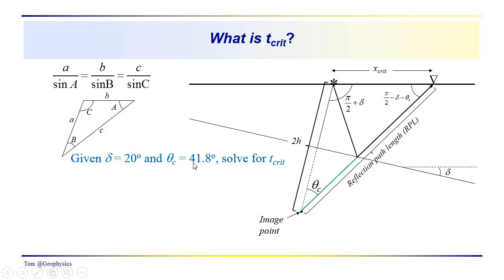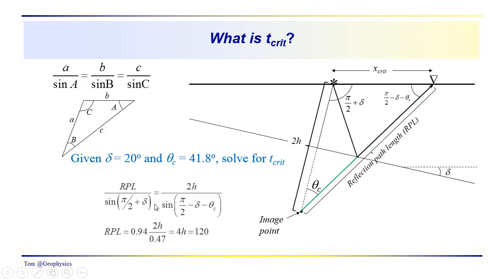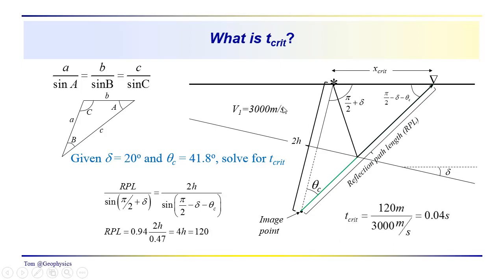With our given values, we solve for the reflection path length (RPL) using: RPL over sine(pi/2 plus delta) equals 2h over sine of the opposite angle. Rearranging and solving, we get RPL equal to 0.94 times 2h divided by 0.47, which turns out to be very close to 4h — about 120 meters in this case. Using a velocity of 3,000 meters per second, the arrival time of the reflection at the critical point is 0.04 seconds.